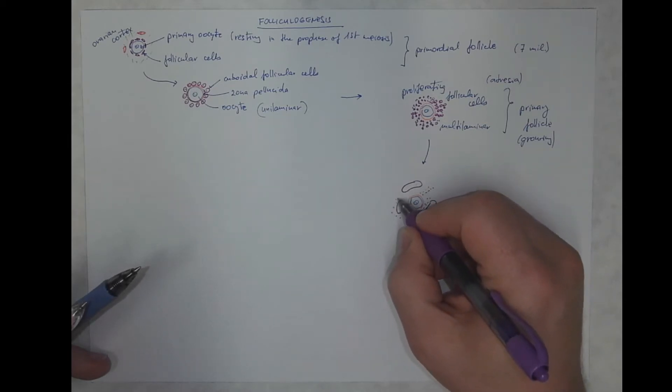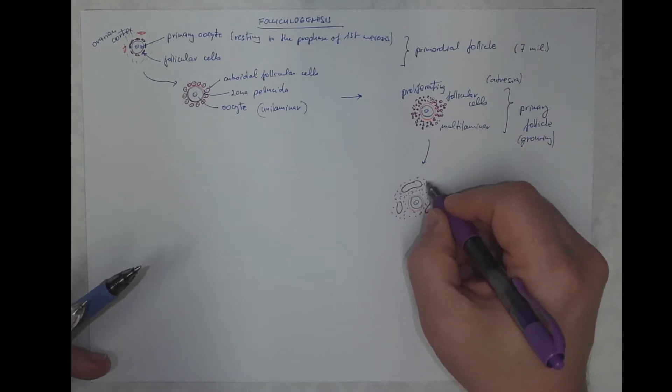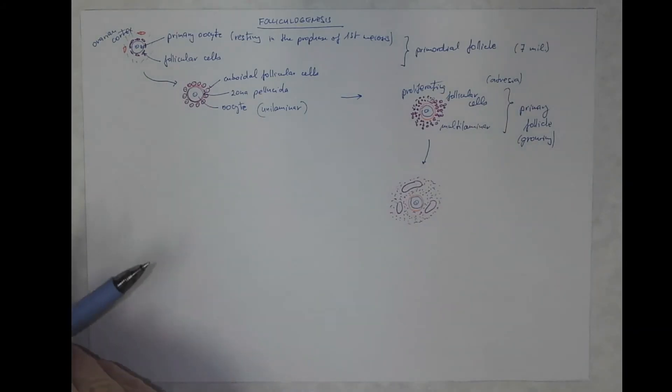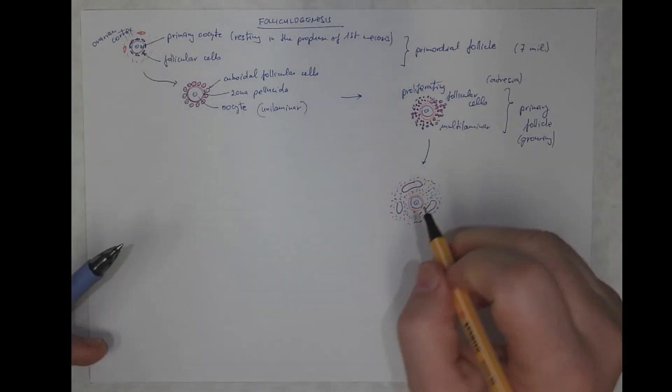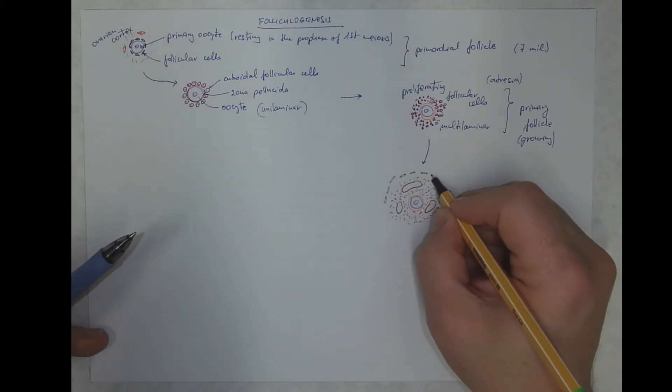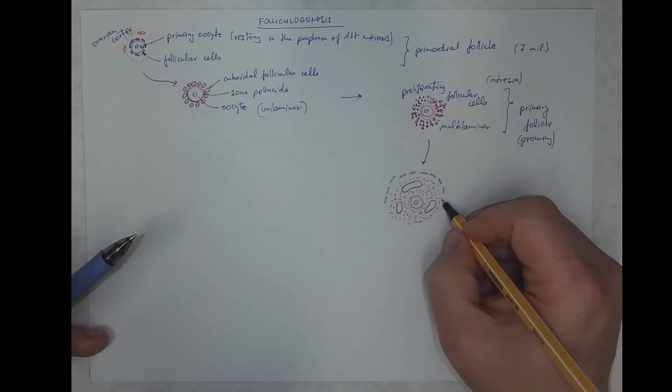Later on, these cavities will fuse together, but for some period, for some time, they are follicle cells and some cavities filled with the liquid. In the outer, on the outer aspect, we got new cell populations called theca.